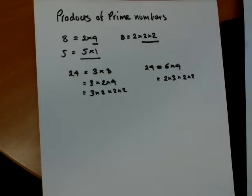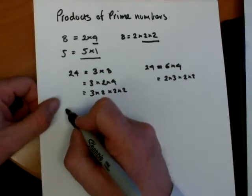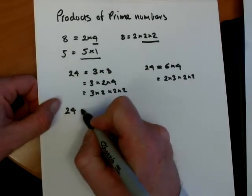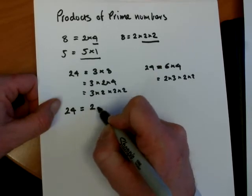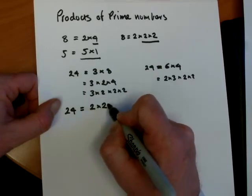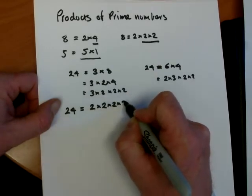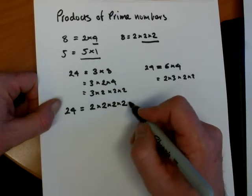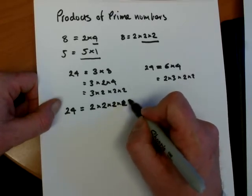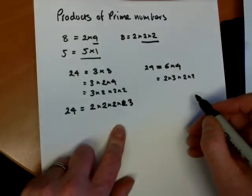Now with these, the multiplication, the order in which we write down the numbers makes no difference at all. So I'm going to write them smallest first. I've written one too many there. And so we've got 2 times 2 times 2 times 3.